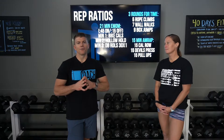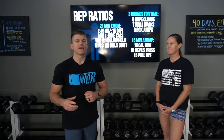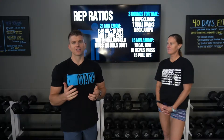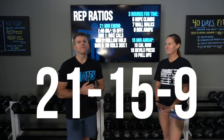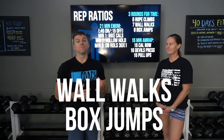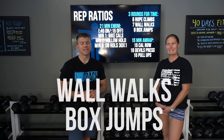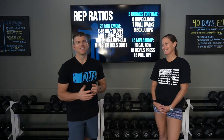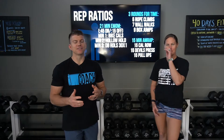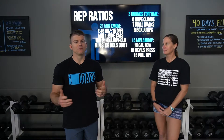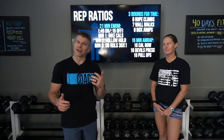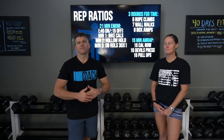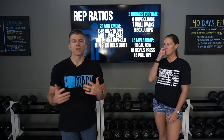When I think about balanced programming and rep ratios, I always think of an example. It was one of my first workouts I ever did in a CrossFit setting — it was 21-15-9 of wall walks and box jumps — and that was a terrible workout. No one should ever program a workout with 45 wall walks. I remember spending so much time just laying on my belly with my head tilted to the side because the box jumps were so quick and it felt like I was spending literally an hour on wall walks.